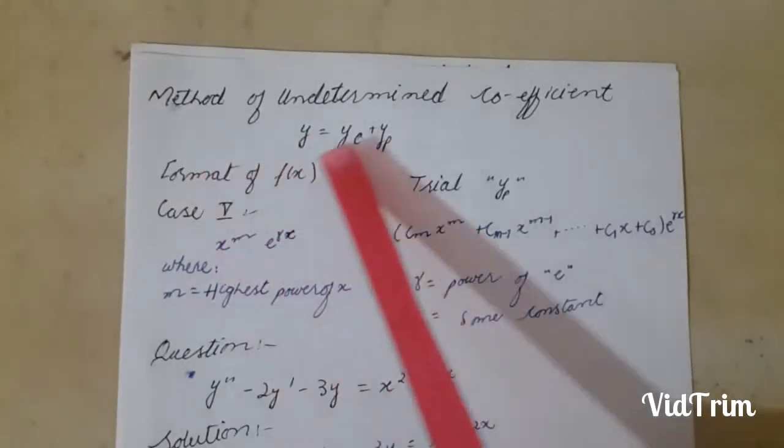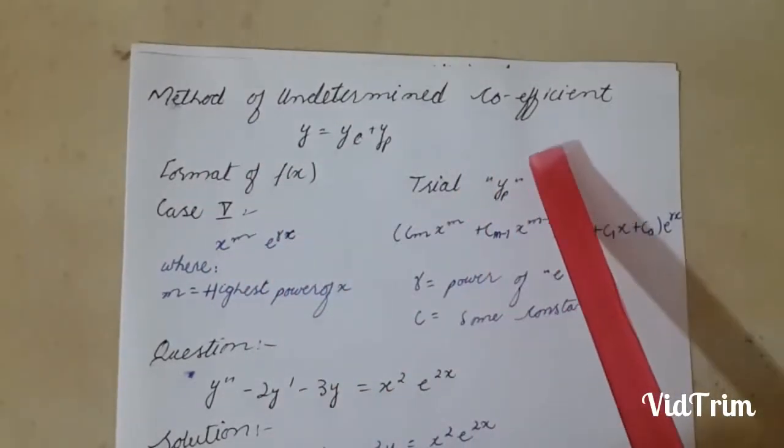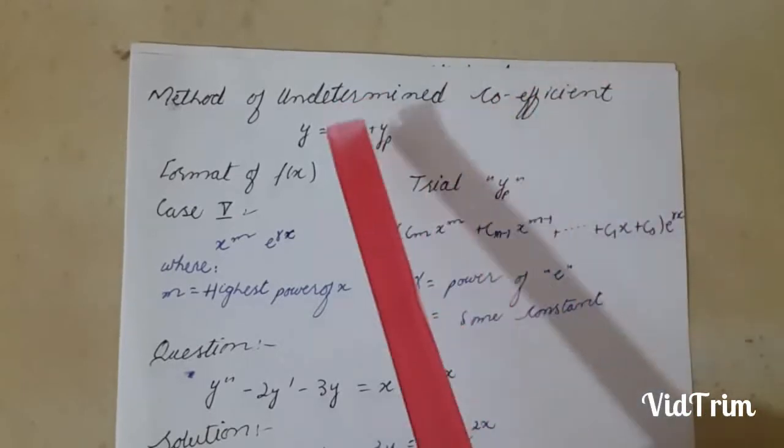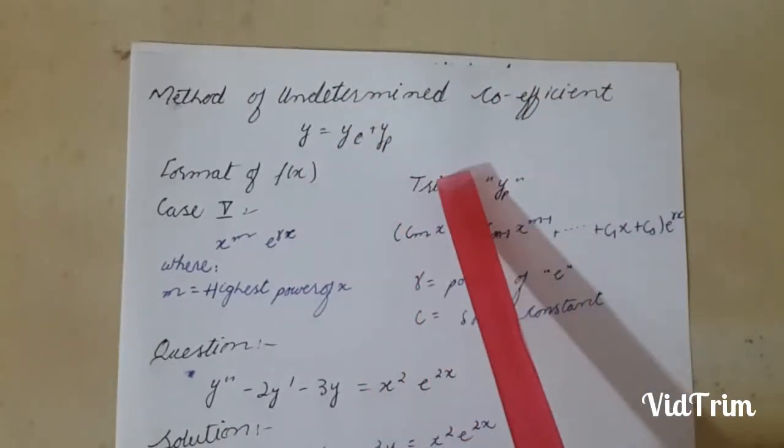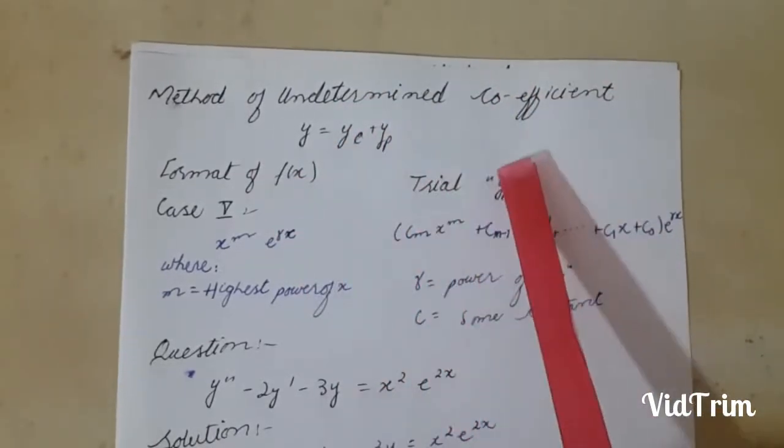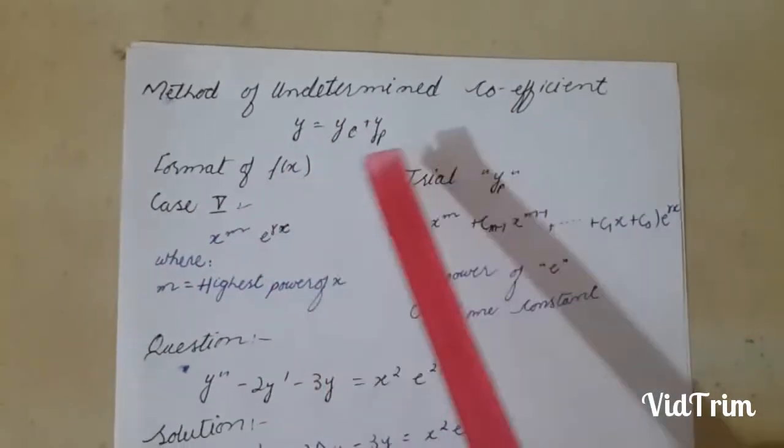Today we will use the method of undetermined coefficients for our final solution y equals yc plus yp. In this method we suppose trial yp. Today I will describe case 5 of this method